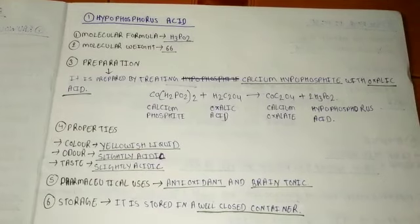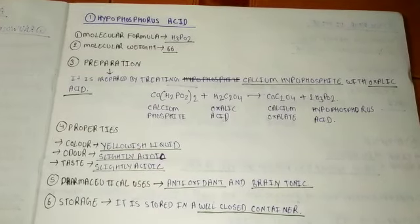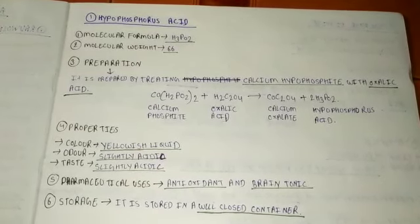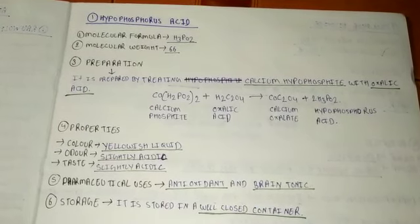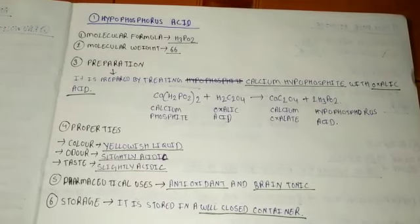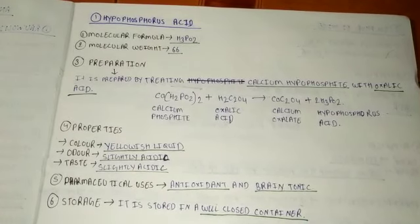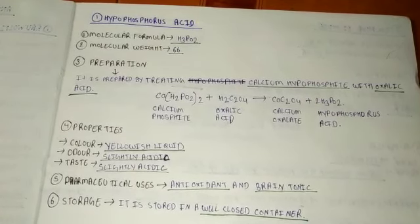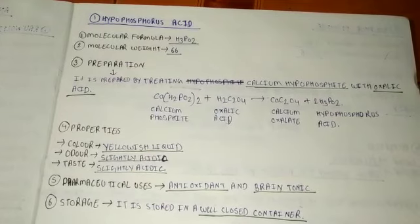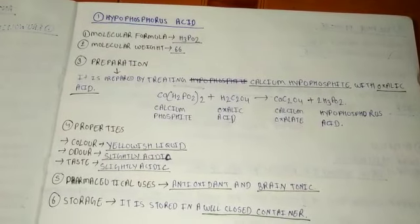Its preparation: it is prepared by treating calcium hypophosphite with oxalic acid. When you react calcium hypophosphite with oxalic acid, you will get calcium oxalate and your main product, hypophosphorus acid H3PO2.